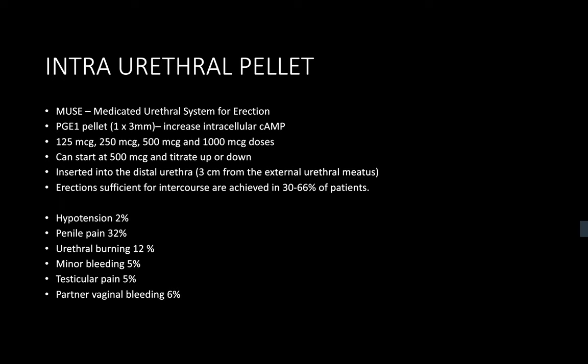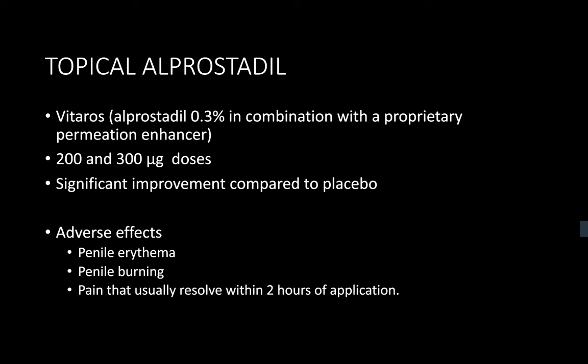What is the mechanism of action of alprostadil? Alprostadil is a form of PGE1, which together with vasoactive intestinal peptide activates adenylate cyclase. This converts ATP into cyclic AMP, which stimulates protein kinase A, which reduces intracellular calcium and leads to smooth muscle relaxation.